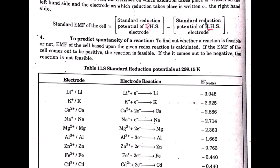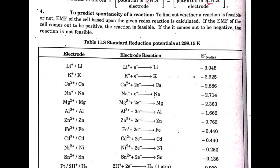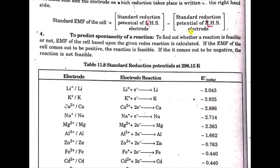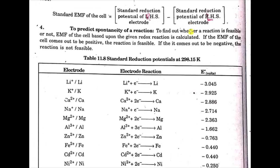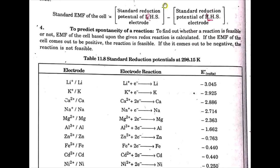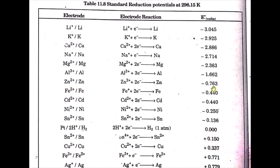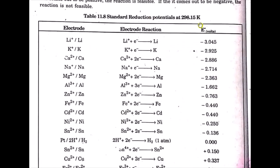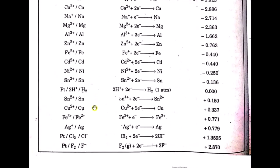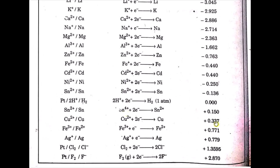When the overall EMF of the cell is positive, the cell is possible and can be constructed. For the zinc-copper cell, placing copper on the right side and zinc on the left side gives a positive EMF, confirming the cell can be constructed and its EMF value will be positive.